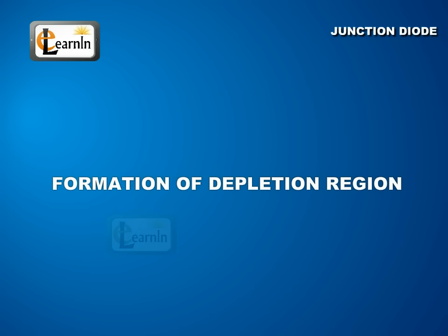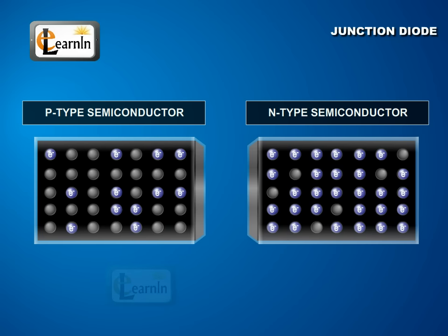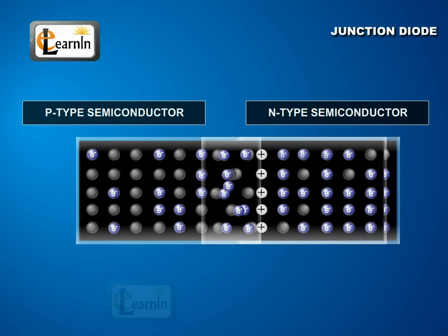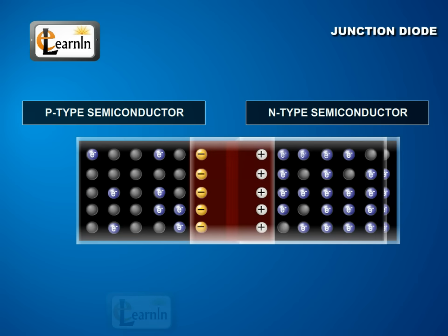Formation of depletion region. The PN junction formed out of the P-type and N-type semiconductor separates P-type semiconductors from the N-type semiconductors. However, because of the contact, some of the electrons from the N-side enter the P-side. Similarly, some of the holes from the P-side enter into the N-side.